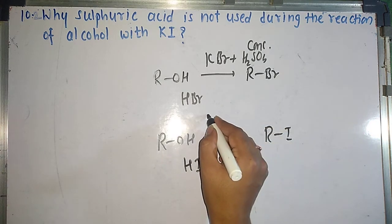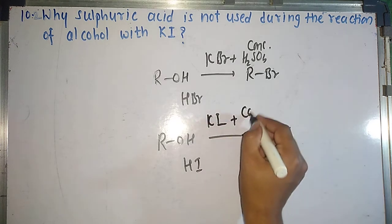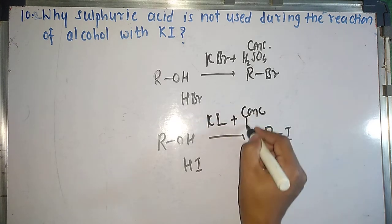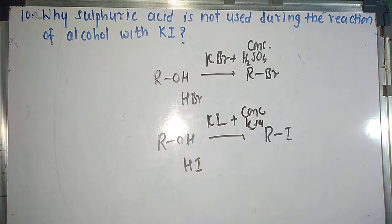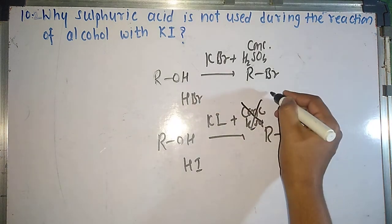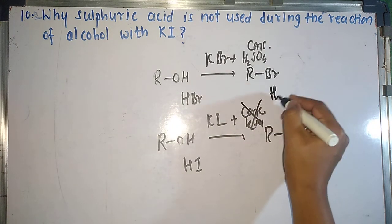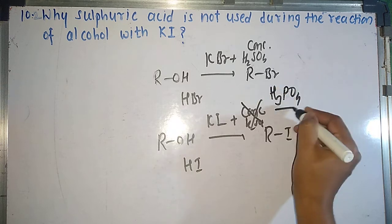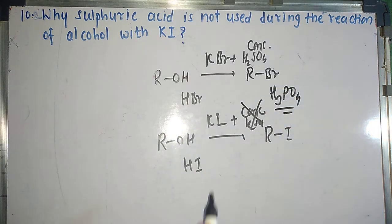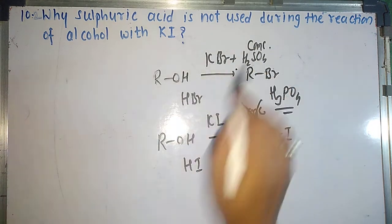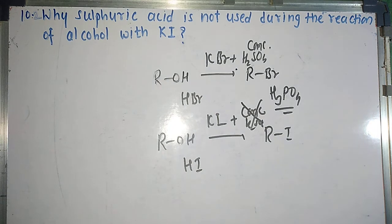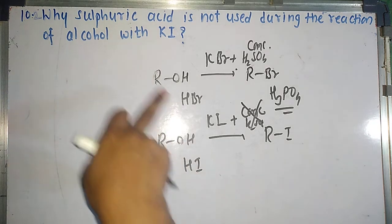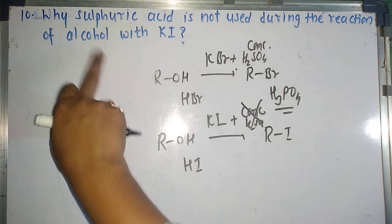Actually, in this reaction, concentrated H₂SO₄ is not used. Instead, we use H₃PO₄, that is orthophosphoric acid. In the first reaction we use concentrated sulfuric acid, but in the second reaction we cannot use it. When KI reacts with H₂SO₄, since it is a dibasic acid it will generate 2H⁺, and I⁻ will generate twice HI. So we need 2KI and we get K₂SO₄ as a by-product.